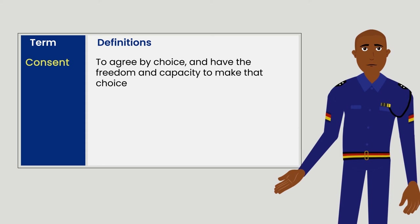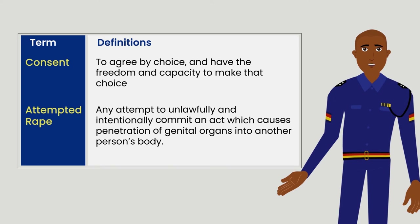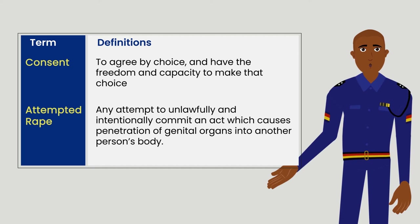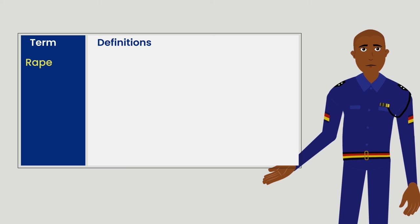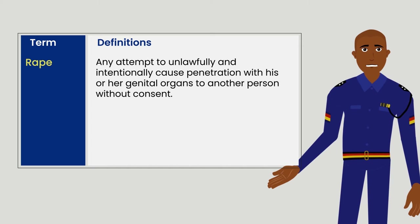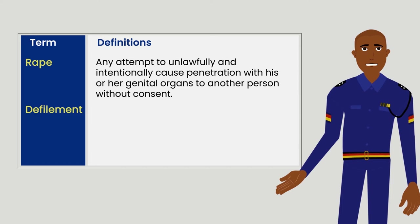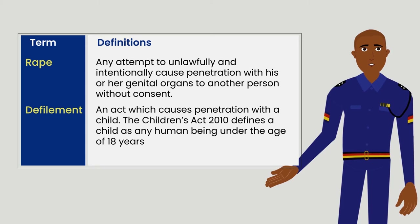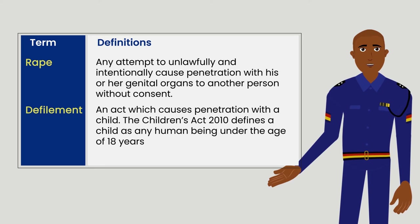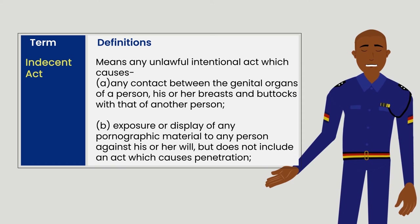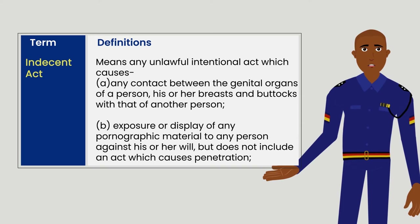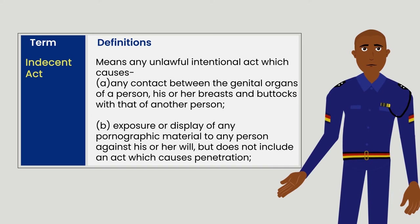Consent: to agree by choice and have the freedom and capacity to make that choice. Attempted rape: any attempt to unlawfully and intentionally commit an act which causes penetration of genital organs into another person's body. Rape: any attempt to unlawfully and intentionally cause penetration of genital organs into another person without consent. Defilement: an act which causes penetration with a child. The Children's Act 2010 defines a child as any human being under the age of 18 years.